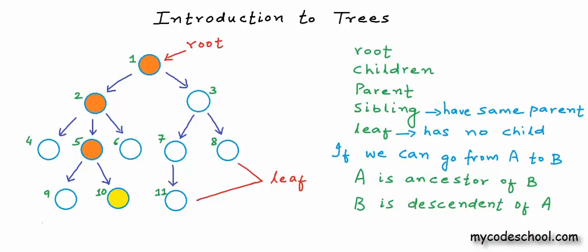Let me ask some questions to check understanding. What are the common ancestors of 4 and 9? Ancestors of 4 are 1 and 2; ancestors of 9 are 1, 2 and 5. So common ancestors are 1 and 2. Next: are 6 and 7 siblings? Siblings must have the same parent. Nodes 6 and 7 do not have the same parent — they have the same grandparent. Nodes not having the same parent but having the same grandparent can be called cousins. So 6 and 7 are cousins. We can also say node 3 is the uncle of node 6, because it's the sibling of node 2, which is the parent of 6.